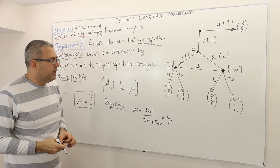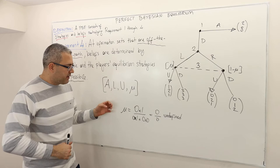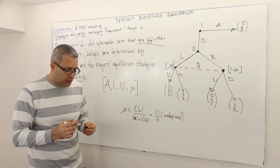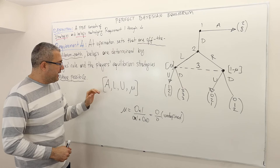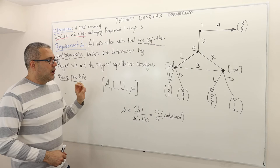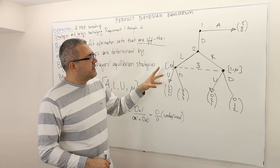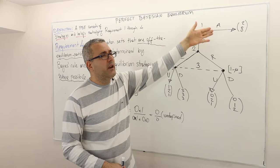So we again have mu equals zero divided by zero, which is undefined. Does that mean this strategy profile with any mu value satisfies requirement four? No. Why not? Because here it is actually possible to use Bayes' rule. Look at this game again: this information set is off the equilibrium path simply because player one is expected to play A with probability one.